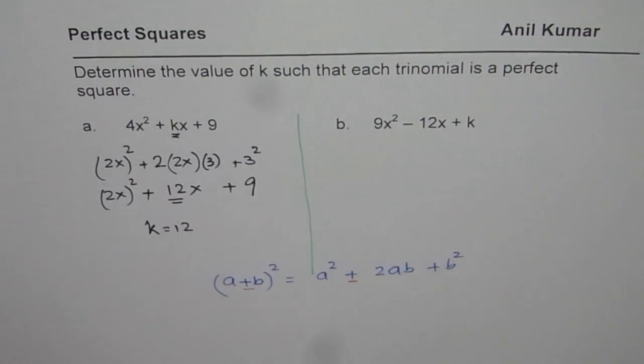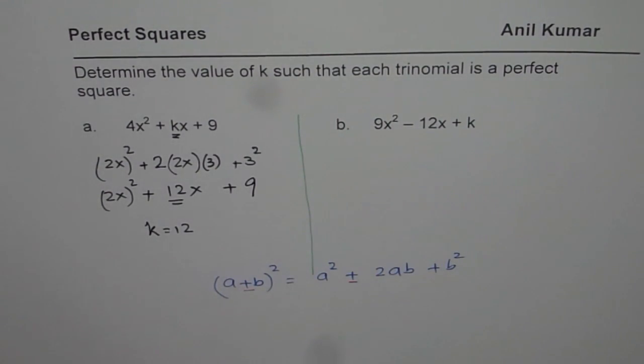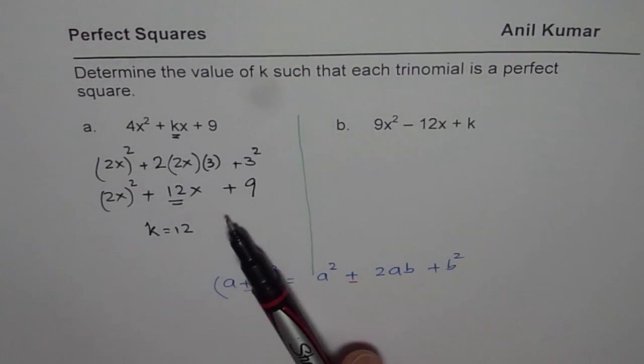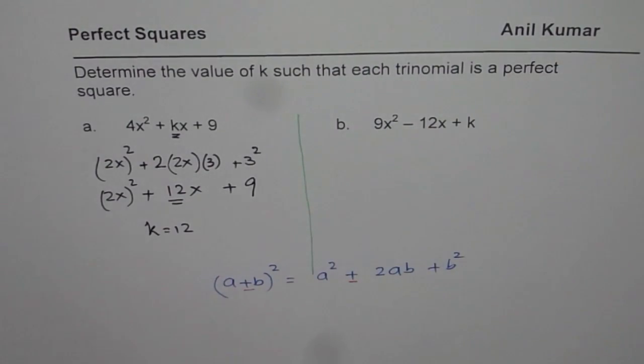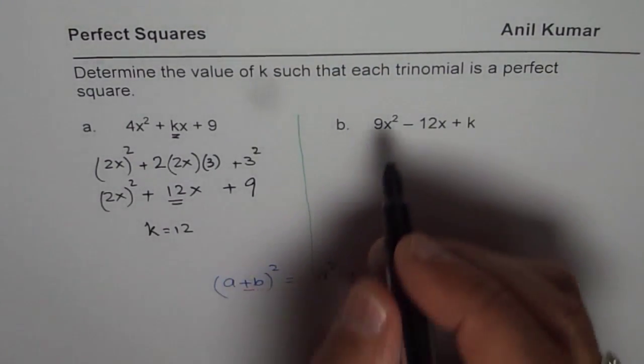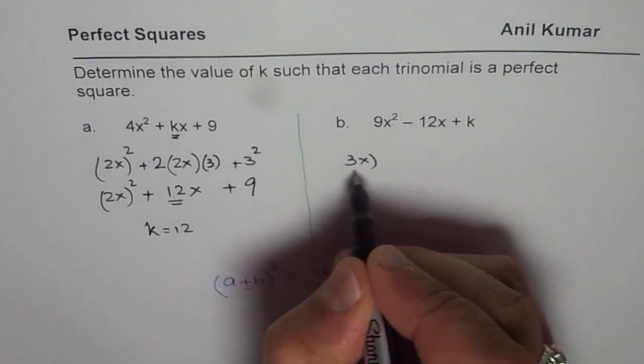Now let us see how to find k in the second trinomial. Strategy in this case is kind of similar. So what we will do here is, we will again write 9x² as (3x)².